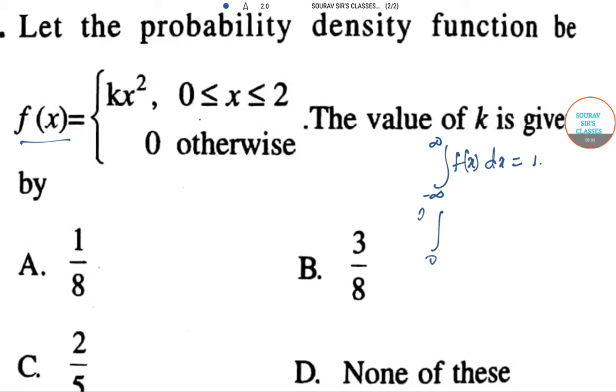So we can write 0 to 2 f(x) dx. f(x) is kx square dx equals 1. Now k is a constant, so k can be taken out as common and we have to integrate 0 to 2 x square dx equals 1. This has to be kept in mind that this will always equal 1. From there we have to start the sum.